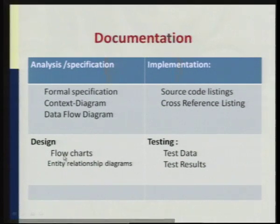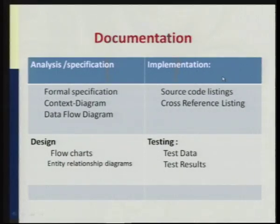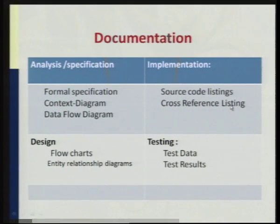Within design, we look at flowcharts and entity relationship diagrams as explained in DBMS. Flowcharts give a basic understanding of how exactly the system is to be designed. We extract the attributes required for each entity, based on which we build an architecture specific to the domain system. The third aspect is implementation. The program involves source code and object code, so a source code listing and cross-reference listing are also required.